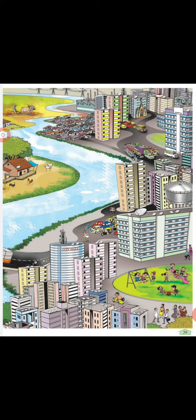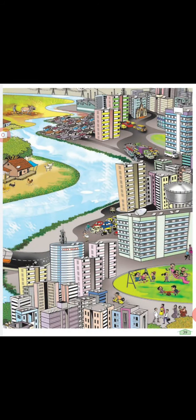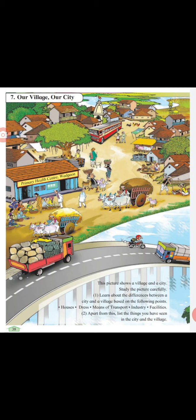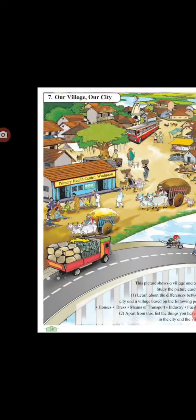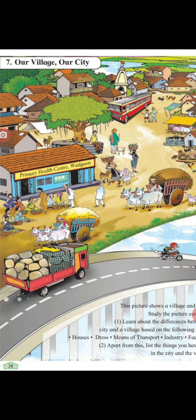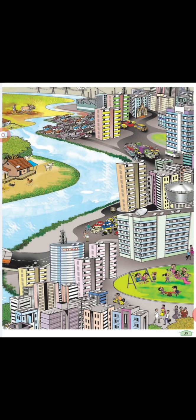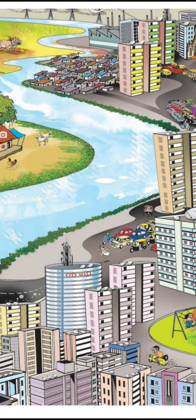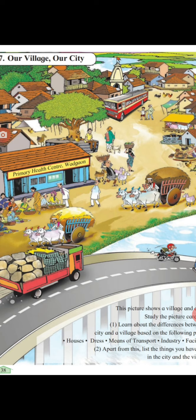Children, tell me — is the city more developed or the village more developed? The facilities available in the city are not available in the village. For example, a big hospital is not available in the village; it is available in the city. In the village, there is a small medical health center. In the city, there are big hospitals and shopping malls. In the village, there are only small shops or markets.